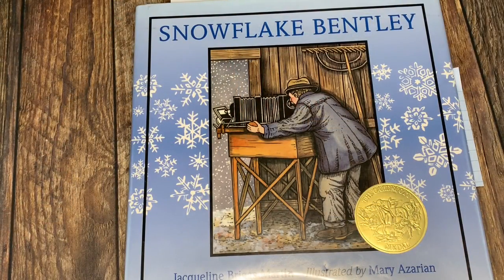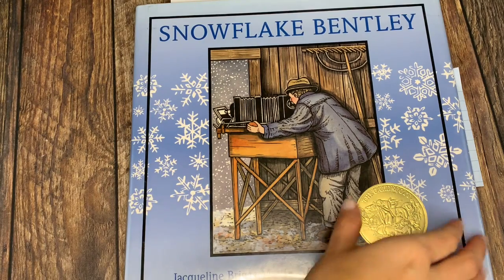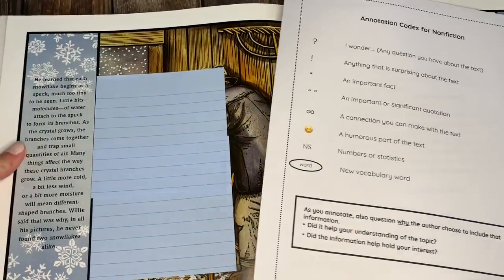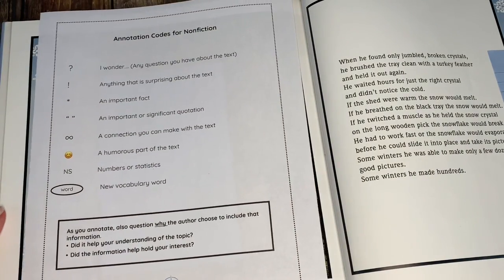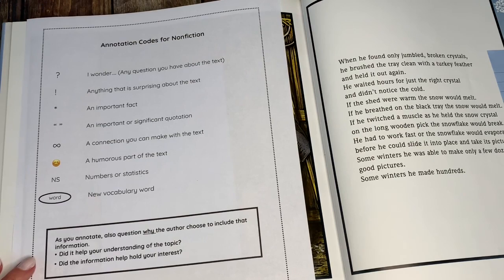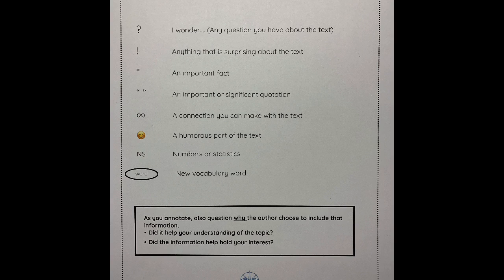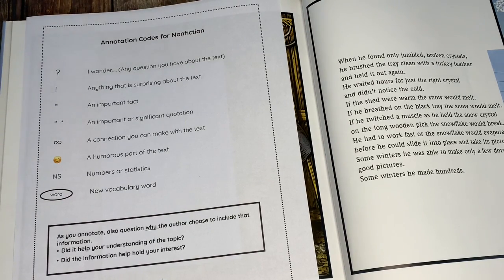Hi there. Today we're going to practice annotating a text, and the text we're going to be using is Snowflake Bentley by Jacqueline Briggs Martin. Annotation sounds complex but the idea is really quite simple. In the description of this video you will find a PDF that you can download that has the different codes for how to annotate nonfiction. This book about Snowflake Bentley is nonfiction because it is about Snowflake Bentley's life and facts about his life.